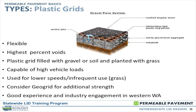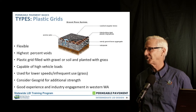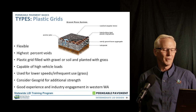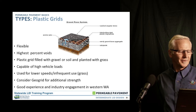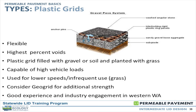The plastic grid systems are flexible with very high percent voids — you really have to work to plug this stuff up; it infiltrates quite rapidly. There are plastic grids, concrete grids, and old hastings blocks that have been around forever. But we're going to focus primarily on the plastic grid systems. They're either filled with gravel or soil or a media planted with grass, capable of high vehicle loads, used at lower speeds. Good industry engagement in this region too.